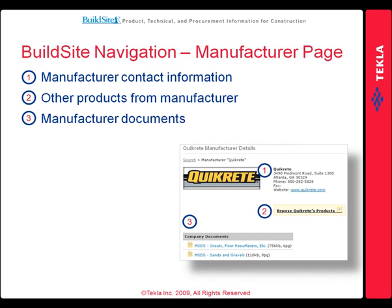Searching by manufacturer is yet another way to search for product information. Within each manufacturer page, manufacturer contact information is provided. All available product information is served up to the user, as well as a link to browse other products by the same manufacturer.